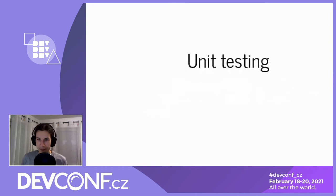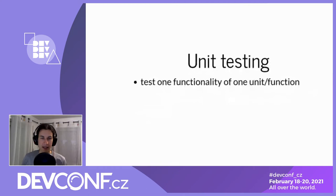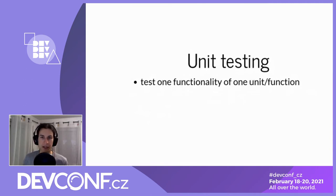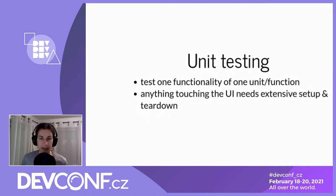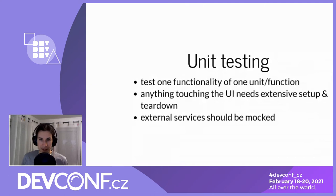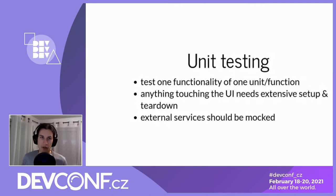Let's get to unit testing. Unit testing means you test one teeny tiny chunk of code and one specific functionality - usually a function or a class - to check whether it fulfills its purpose. Anything that touches the UI will need extensive setup, teardown, and verification, which will be a pain. If you have external services, my recommendation for unit tests is: mock them out. Use a mocking library for credentials, or do dependency injection, since unit tests should be relatively fast.